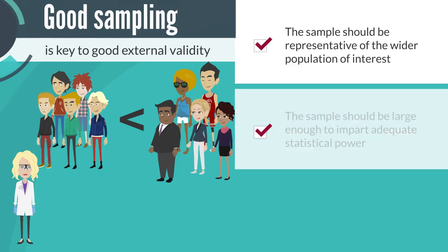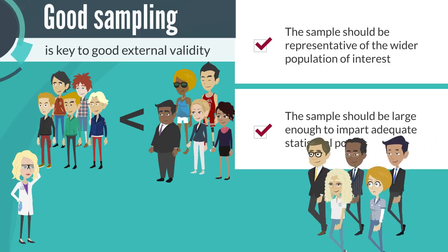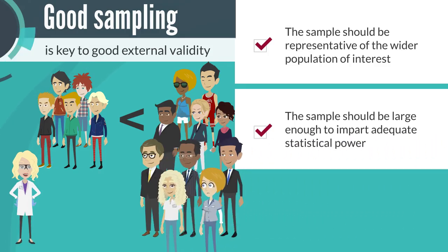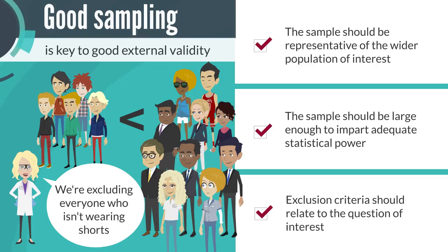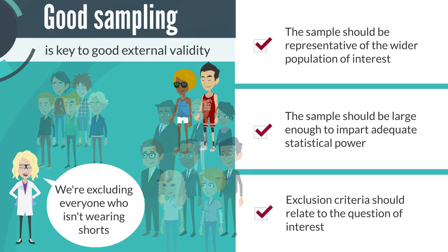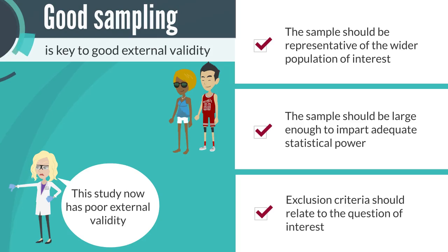Secondly, a large enough group of individuals should be sampled to impart adequate statistical power. Thirdly, any exclusion criteria used in a study should relate to the question of interest. If the exclusion criteria are too strict, external validity will decrease.